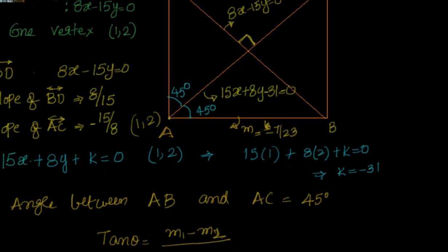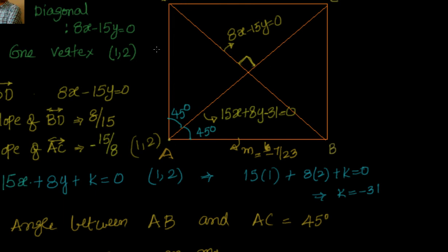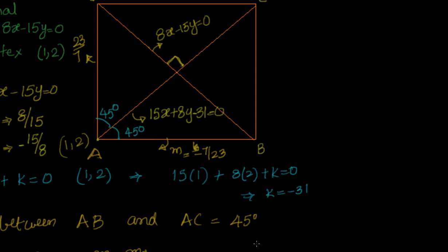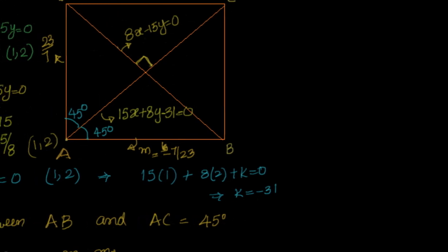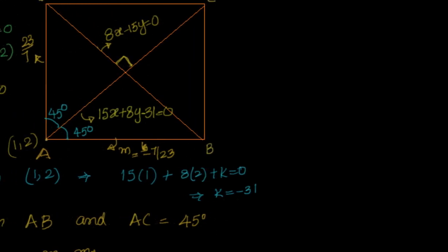Now we know the slope of AB is minus 7 by 23. Obviously the slope of AD will be the negative reciprocal, which is 23 by 7. Now this is pretty straightforward — you know the slope and you know the point, so you can easily find the equations of AD and AB.